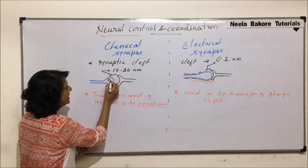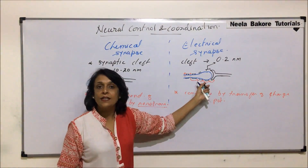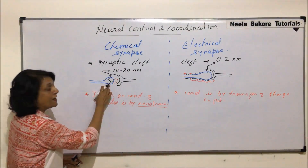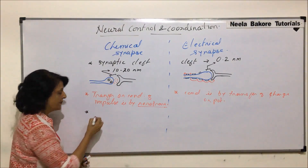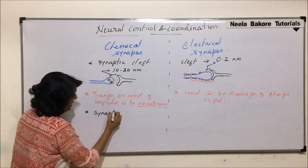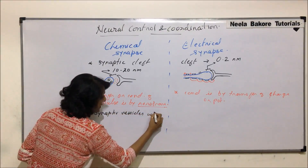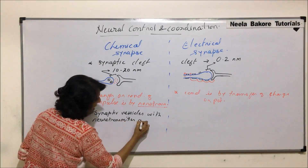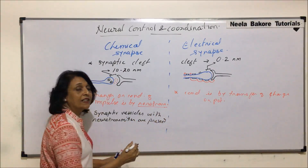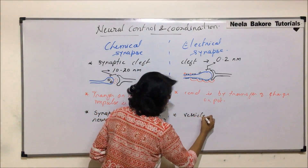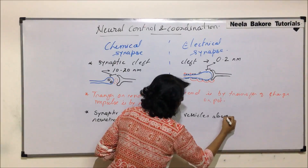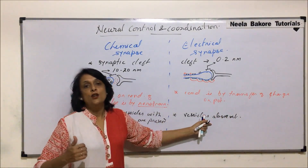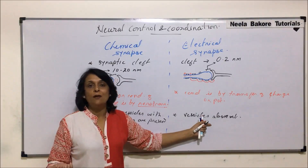In chemical synapse, neurotransmitter-containing vesicles are needed, and synaptic vesicles with neurotransmitters are present in the axon end bulb. In electrical synapse, there is no chemical to be released, so synaptic vesicles containing neurotransmitters are absent. These vesicles are required in chemical synapse because they carry the chemical; in electrical synapse, no chemical is required, so there is no requirement for these vesicles.